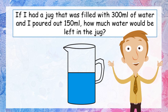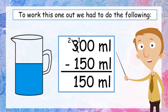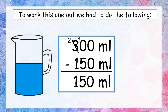The important information is we had a full jug of 300 millilitres and we poured out 150 millilitres — that's all we need. Everything else is just extra information we can ignore. Let's turn that into a sum: 300 millilitres take away 150 millilitres gives us 150 millilitres — that's how much water we had left in the jug. Give yourself a tick if you got that — you're one out of one. Let's go on to the second one.